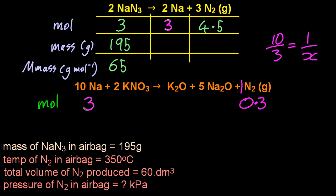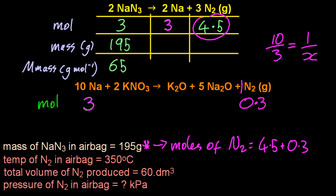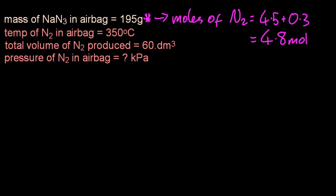All right, so how much nitrogen gas has been made in total? 4.5 plus 0.3. So 4.8 moles. That's my noisy neighbors. I used to edit that out.